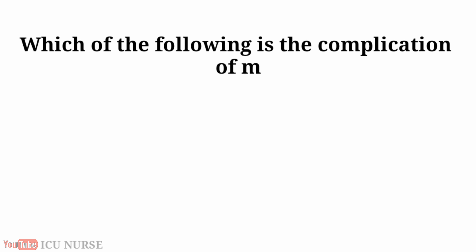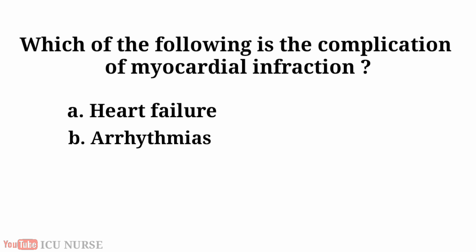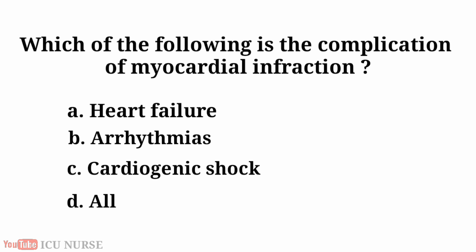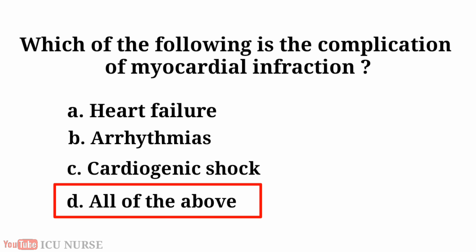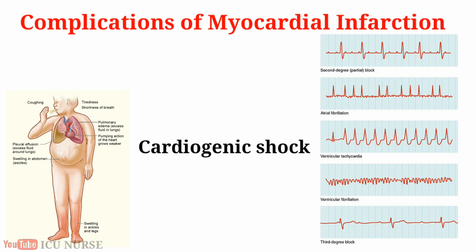Which of the following is a complication of myocardial infarction? A. Heart failure, B. Arrhythmias, C. Cardiogenic shock, D. All of the above. And the answer is D. All of the above. Heart failure, arrhythmias, and cardiogenic shock are all complications of myocardial infarction.